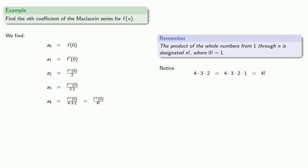Our third derivative divided by 3 times 2. Well, 3 times 2 is really 3 times 2 times 1, or 3 factorial. So our a3 term is the third derivative divided by 3 factorial.